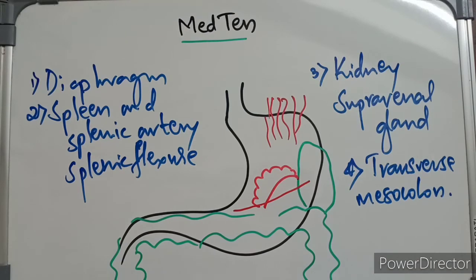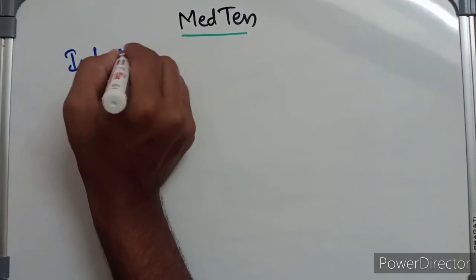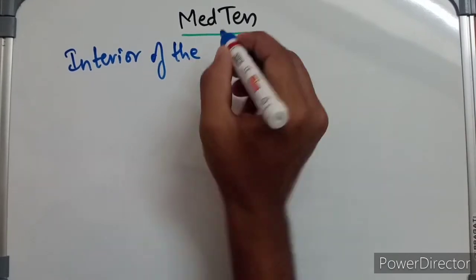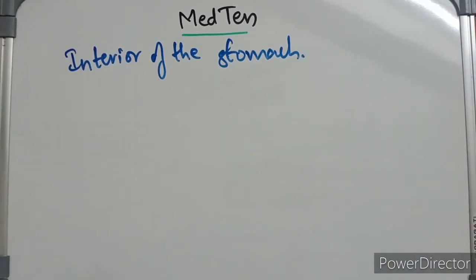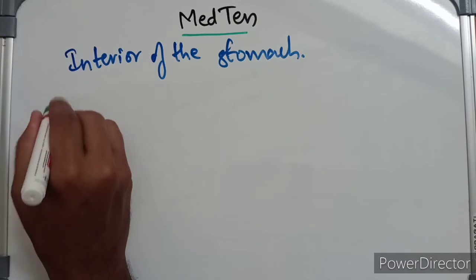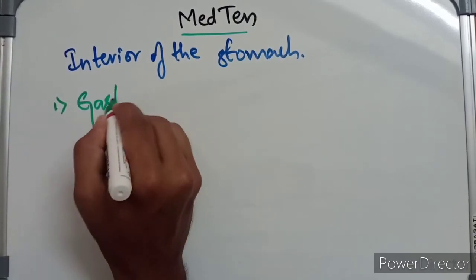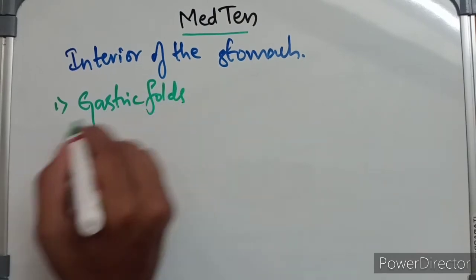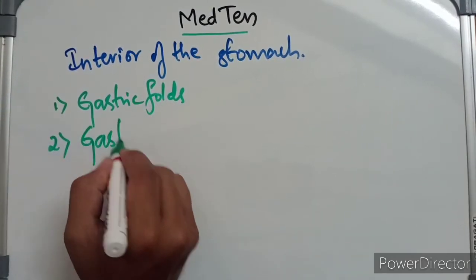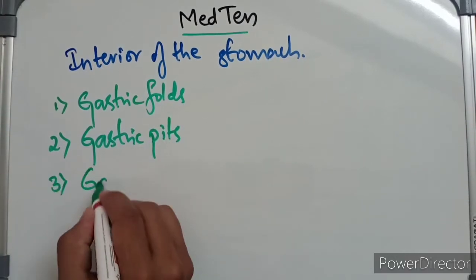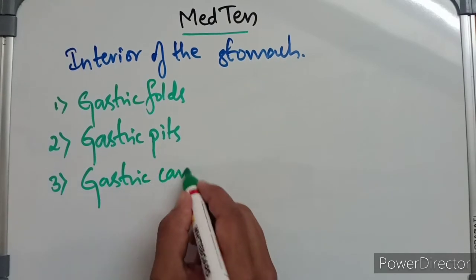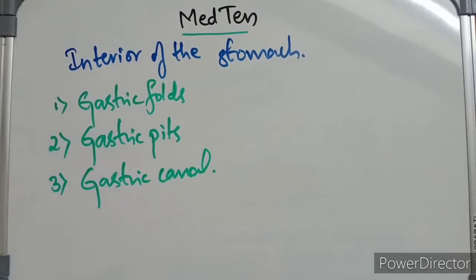So these are the organs that form the stomach bed. Now we are going to discuss about the interior of the stomach. Mainly in the interior of the stomach we will find three things: one is the gastric folds, second one is the gastric pits, and third thing is the gastric canal. Now I am drawing the stomach to show you all these things.